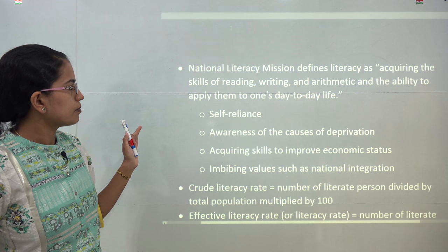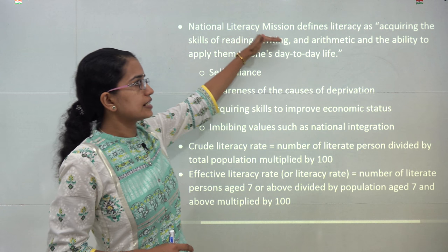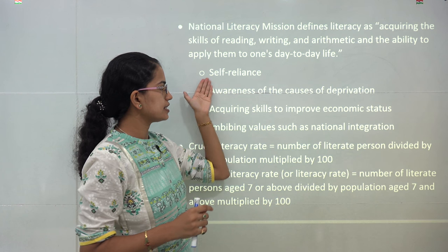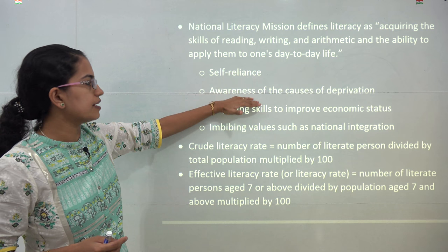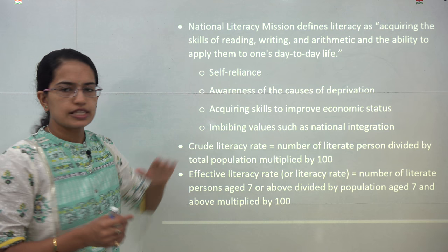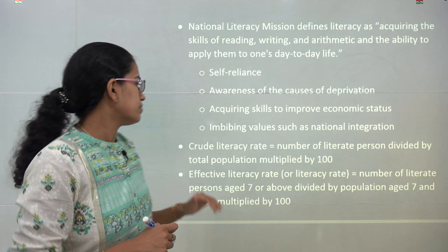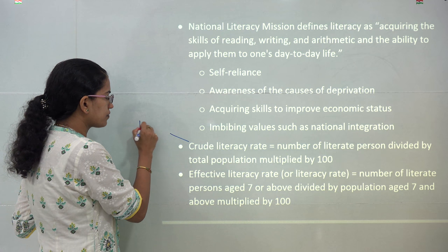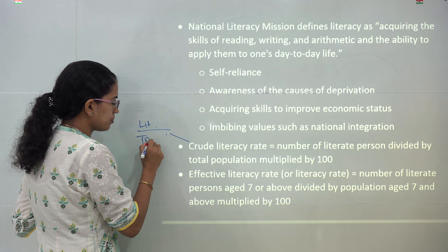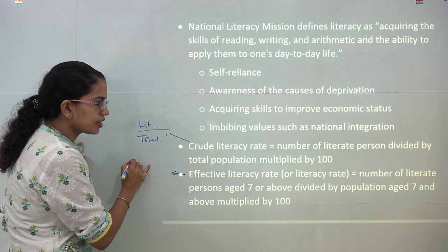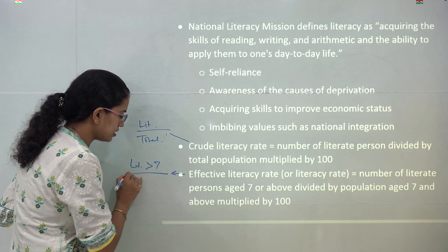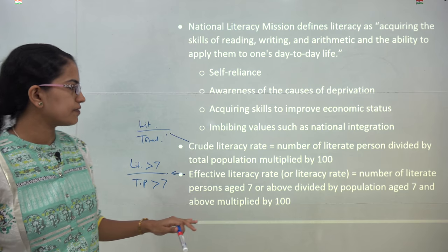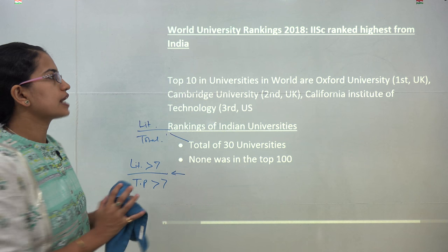The National Literacy Mission focuses on acquiring skills of reading and writing based on parameters like self-reliance, awareness, acquiring new skills, and imbibing values. There are two literacy rate terms: the crude literacy rate is the number of literate people divided by the total population. The effective literacy rate refers to literate people above the age of seven years divided by the total population above the age of seven.